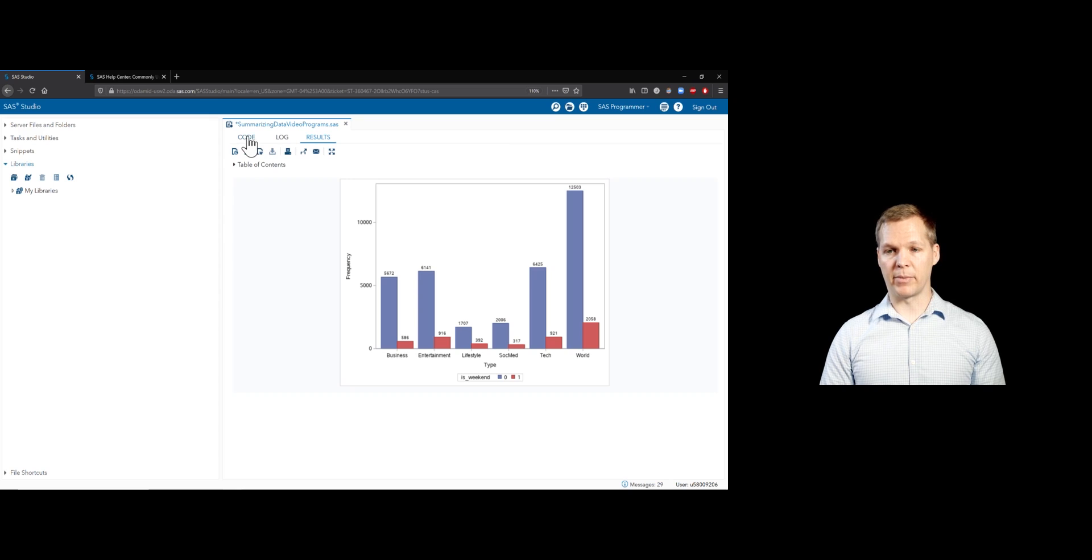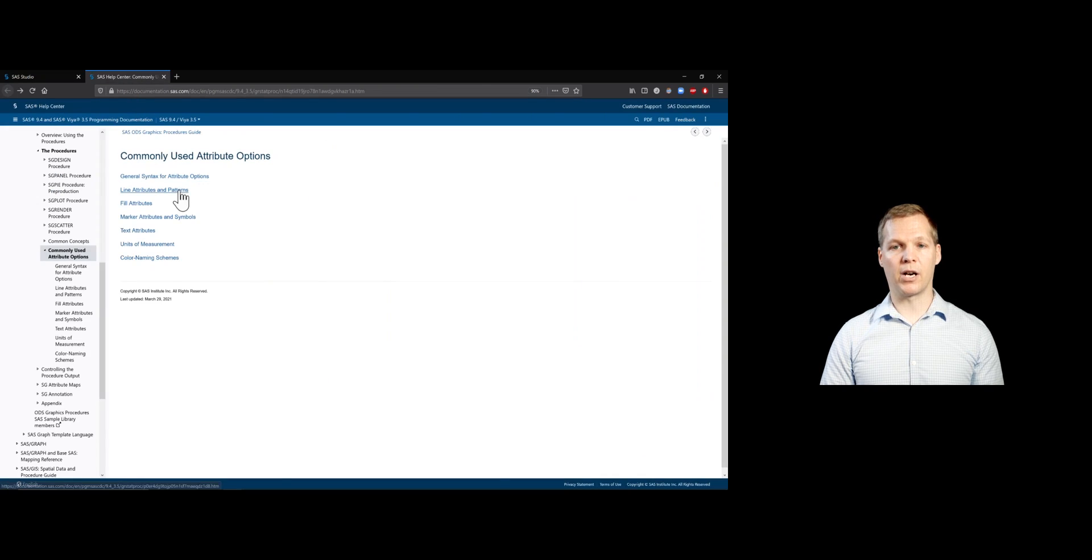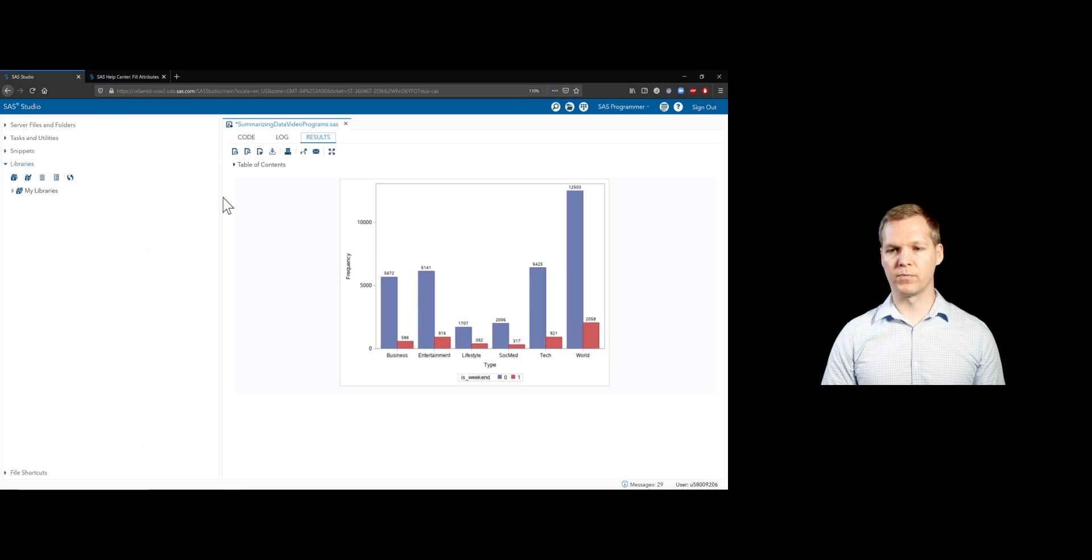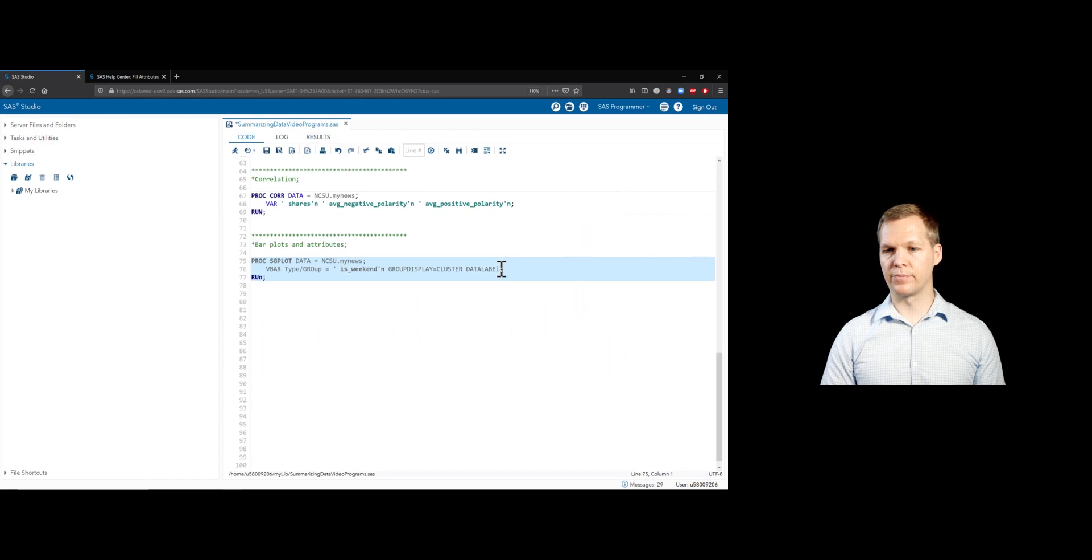Okay, so that's cool. This is really useful information allowing us to understand what types of articles are on the weekend and not on the weekend. Let's go ahead and customize this a little bit. So we go over here to our commonly used attribute options. We already saw how to change our fill attributes. Let's go ahead and just do that again. We do fill attributes and then equal. The two things that we can change are color and transparency. Let's just change the transparency of our bars here.